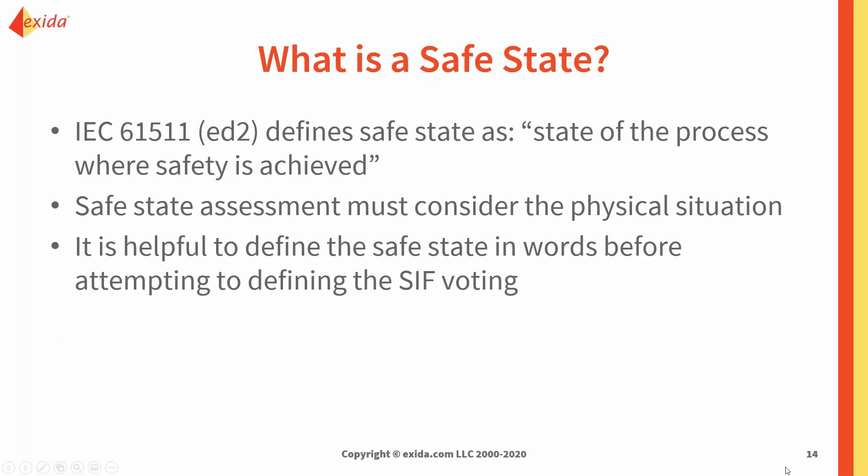Moving forward into the definition of a safe state: IEC 61511 defines it as the state of the process where safety is achieved. Whenever we have a safety instrumented function trip, certain activities need to occur to bring that into a safe condition. What we're looking for in the verification calculations is sufficient reliability to know that we're achieving that safe state within our SIL target. We need to consider the physical situation when looking at the safe state, as it does impact the voting.